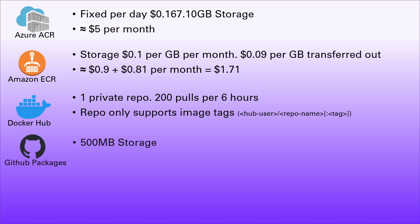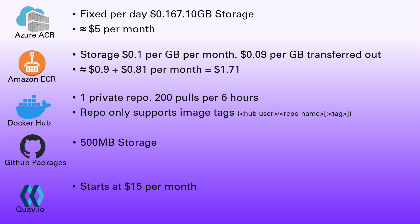GitHub Packages does have a free option, but it's limited to 500 megabytes of storage. To use it, you'd really have to store only a single image of each container — front end and back end — keeping storage right down. For me, the lack of version history is a deal breaker; I'd want at least five to seven days of history so I can roll back if something breaks.